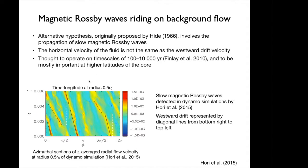Hori et al. used time-longitude plots to detect these waves. On the y-axis we have time and the x-axis is longitude. Westward or eastward drift appears as diagonal lines: westward drift shows as diagonal lines from the bottom right to the top left. They plotted the radial fluid velocity, and the black dotted lines are signatures of magnetic Rossby waves riding on top of the core flow — the background flow shown as white dashed lines.